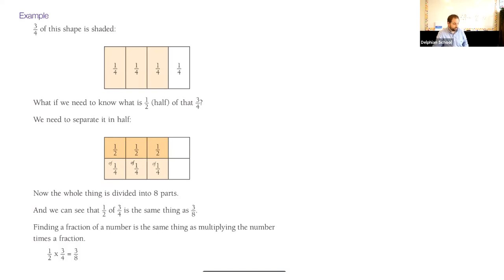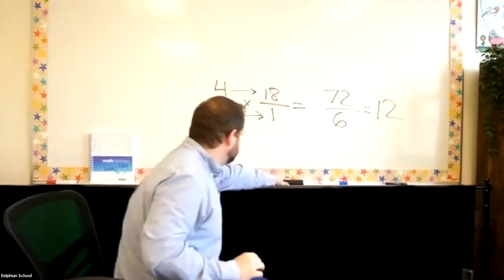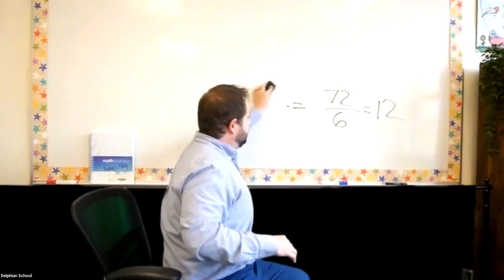Let's do a real-life example. James, would you like to assist me in eating some cake? I knew you'd be willing. I only have one-half of my cake left. James and I are here and I want to share it. So what would one-half of one-half be? I would have to cut my one-half into two pieces, and one-half of that is one-fourth of the cake.